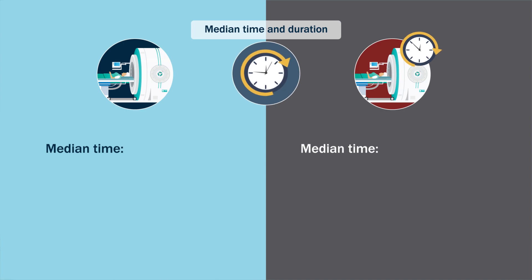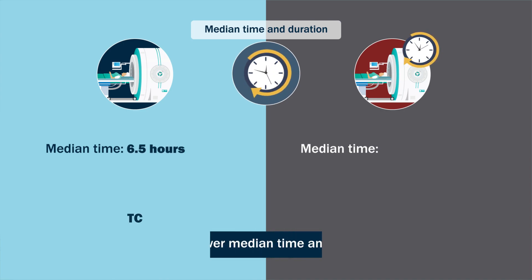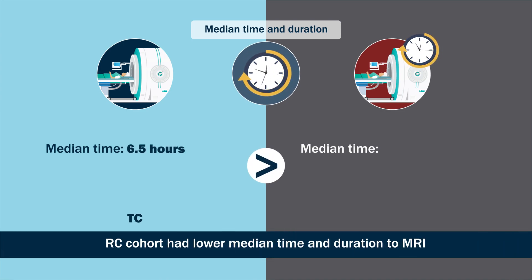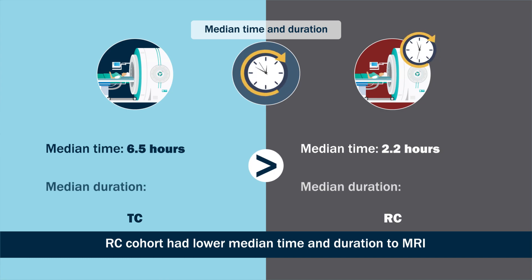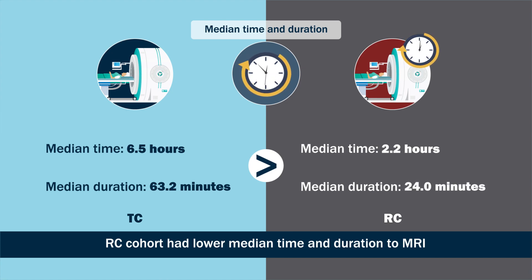Furthermore, the median time to MRI was 6.5 hours for the TC compared to 2.2 hours for the RC, while the median duration of MRI was 63.2 minutes for the TC and 24 minutes for the RC.